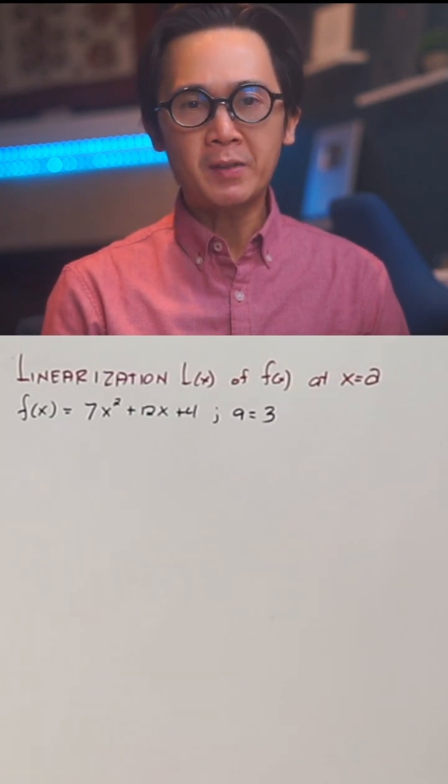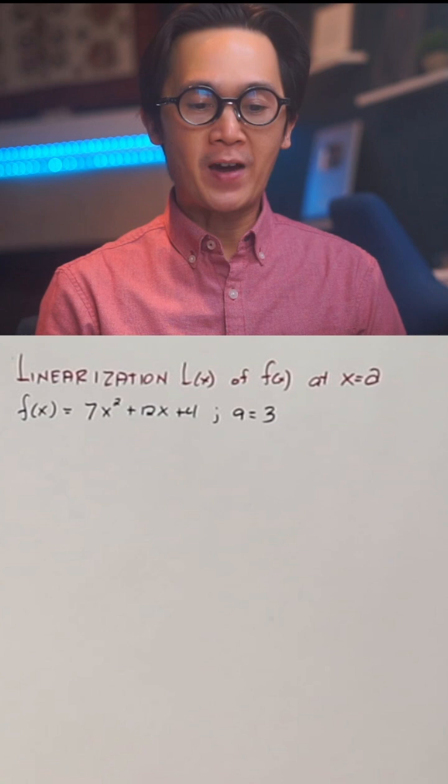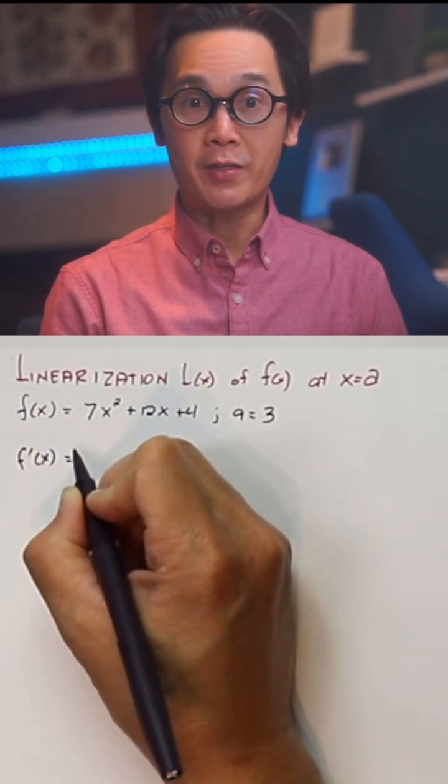Linearization in calculus is pretty much the same as finding the tangent line of a given function. So let's find the linearization of the function f(x) = 7x² + ax + 4 at x equal to 3, where a = 3.